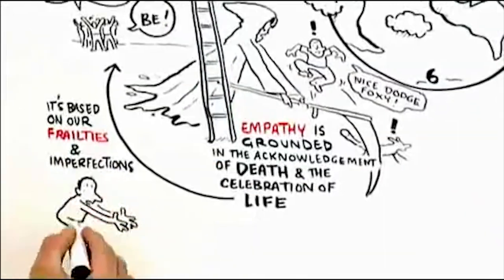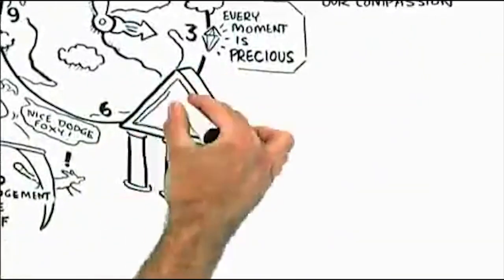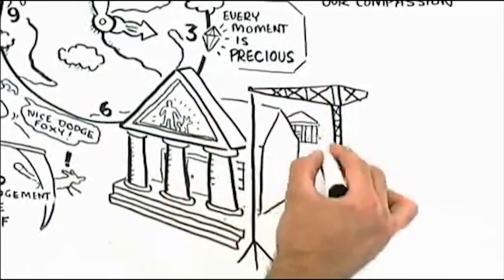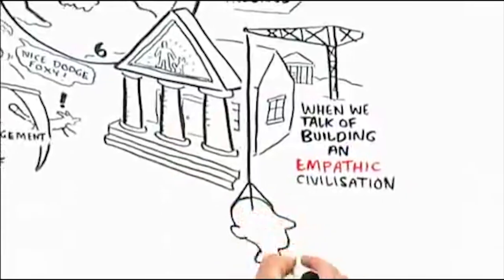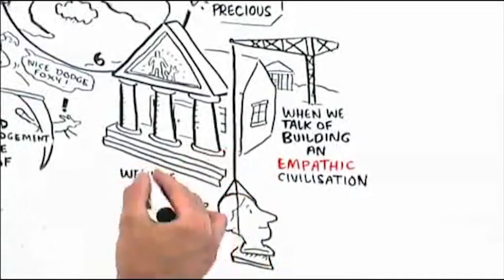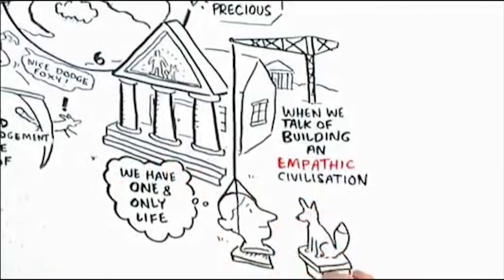It's based on our frailties and our imperfections. So when we talk about building an empathic civilization, we're not talking about utopia. We're talking about the ability of human beings to show solidarity, not only with each other, but our fellow creatures who have a one and only life on this little planet.